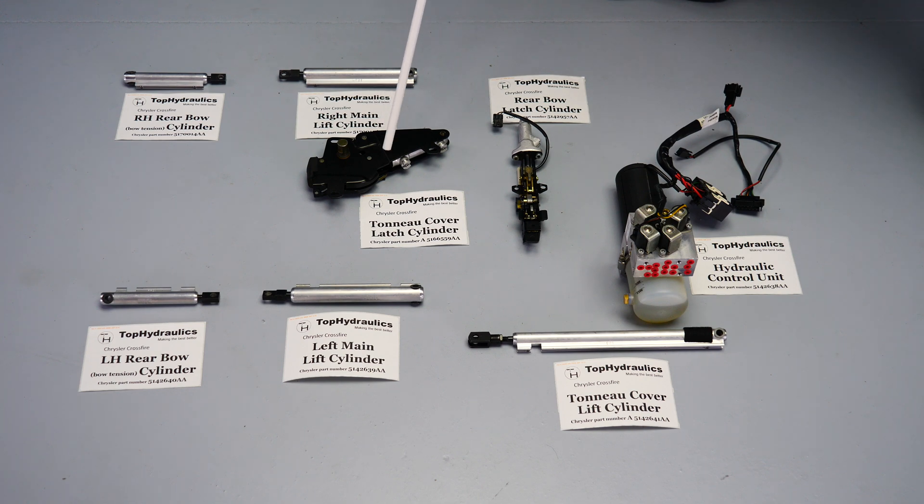Same as the tonneau cover latch cylinder in the tonneau cover latch, which obviously latches the tonneau cover. We have the right and left main lift cylinders that do most of the lifting of the top up and down, and the left and right rear bow cylinders, also called bow tension cylinders, that do the lifting of the rear of the soft top.